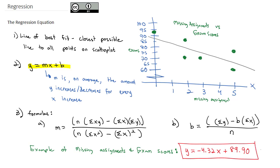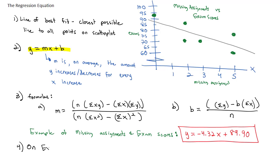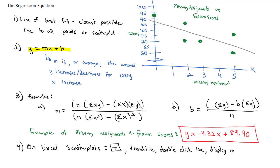This is the equation for the line of best fit for our scatter plot. As you might guess, there is another way to do this in Excel that does not require going through all the formulas and calculations. On Excel, with your scatter plot made, if you hit the add button you can add a trend line. Then double-click the line and you'll find the option to display the equation on the chart, which will give us the equation directly on the scatter plot.